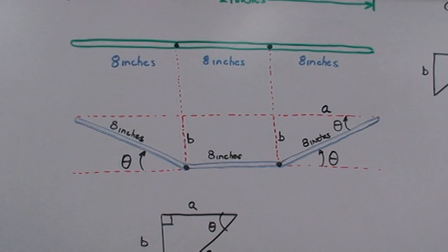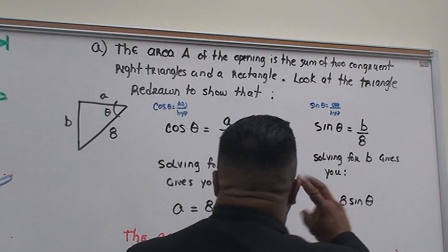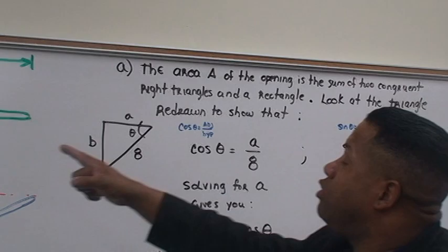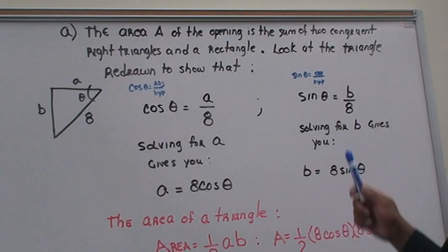Now, we want to basically analyze this first question here, of the problem. So, the area A of the opening is the sum of two congruent angles here and here. Two congruent, sorry, two congruent right triangles. Right triangles. And these are congruent angles, too, as well, but we want to analyze the triangle.